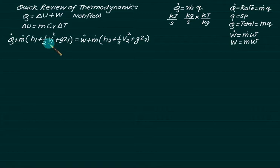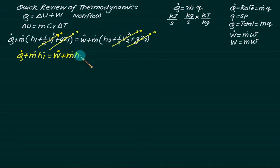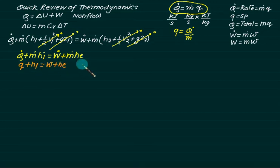In analysis, we will neglect the changes in velocity and the potential energy. They are very negligible quantity in case of steady flow devices as far as the compressor and condenser and evaporator is considered. We're left with Q dot plus M dot H I equal to W dot plus M dot into H E. I for inlet and E for exit. If you divide this quantity by M dot, you will get Q plus H I equal to W plus H E.